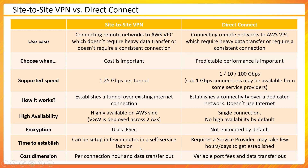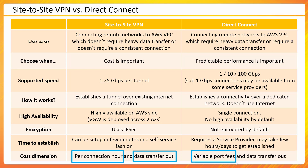Regarding cost, site-to-site VPN charges you per connection hour — how long you keep your connection running. This is a good solution if you only want your connection running in the morning for an initial data transfer and then again in the evening. You also pay data transfer out charges. Direct Connect has variable port fees depending on speed, service provider, and the SLA they offer, plus data transfer out charges.